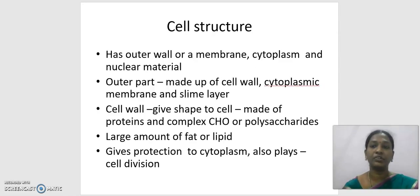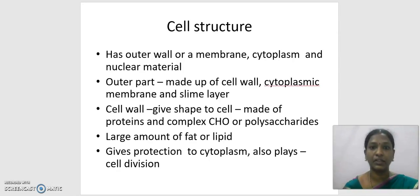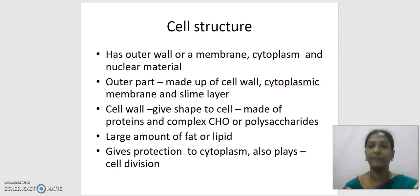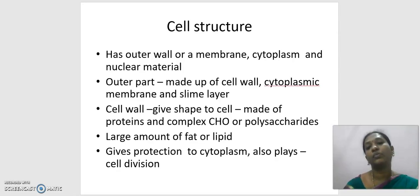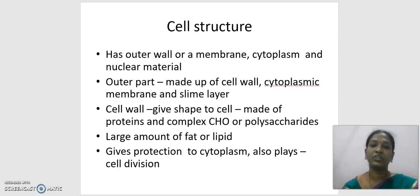Now we will look at the cell structure — the different parts of the bacterial cell. First, they have an outer wall or membrane, cytoplasm, and nuclear material. The outer part is made up of the cell wall, cytoplasmic membrane, and slime layer. The cell wall is the most important part, giving shape to the cell. It is a very thick structure made up of protein, complex carbohydrates or polysaccharides.